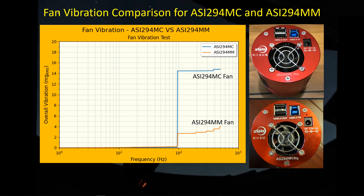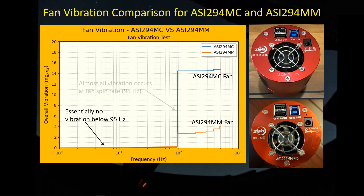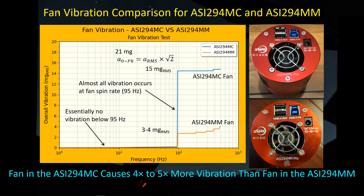I also have an ASI 294MM with the same model fan. I took the MC off the back of the telescope, put the MM on, and repeated the same vibration test. What I'm plotting is the cumulative overall vibration — before 95 Hz there's essentially no vibration, but once you get to 95 Hz the vast majority of the vibration is coming in right at the spin rate of the fan. I measured 15 milli-gs RMS for the 294 MC, but only three to four milli-gs RMS for the MM. That's quite a bit of variability between fans — the ASI 294 MC fan is producing about five times more vibration than the ASI 294 MM fan.